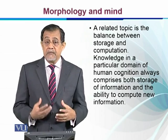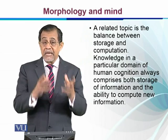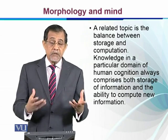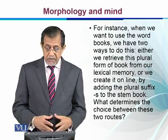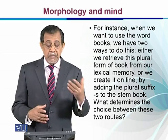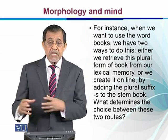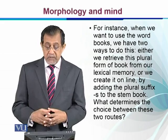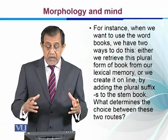When we acquire some knowledge, it goes to our schemas and there we calculate and decide where it is to go and what new information we have received. For instance, when we want to use the word 'books,' we have two ways to do it: either we retrieve this plural form from our lexicon memory, or we create it online by adding the plural suffix to the stem 'book.' What determines the choice between these two routes?